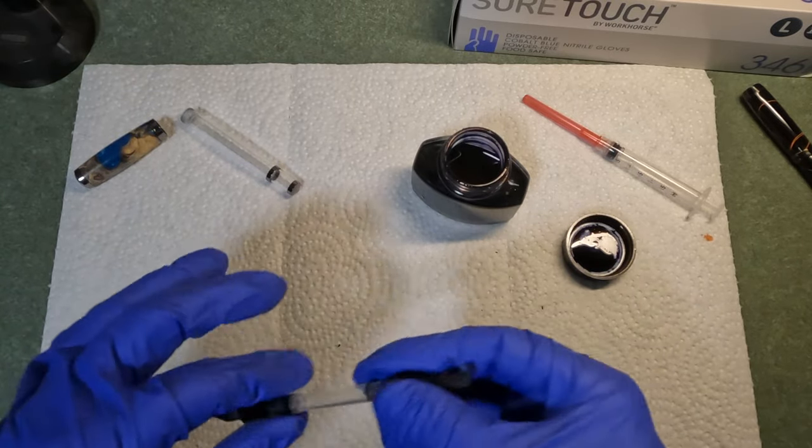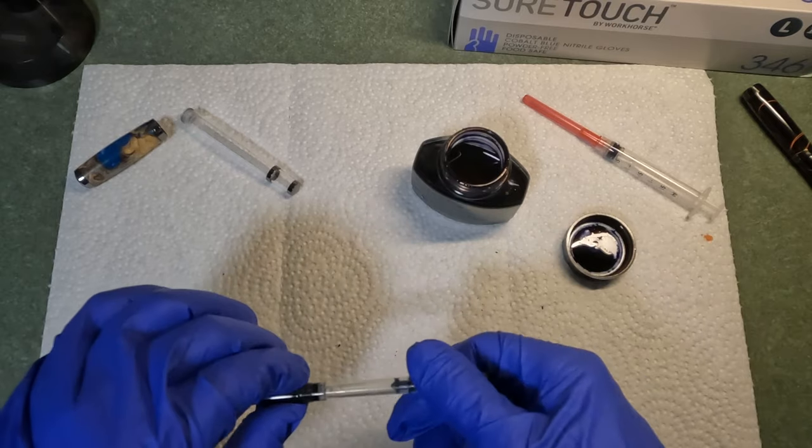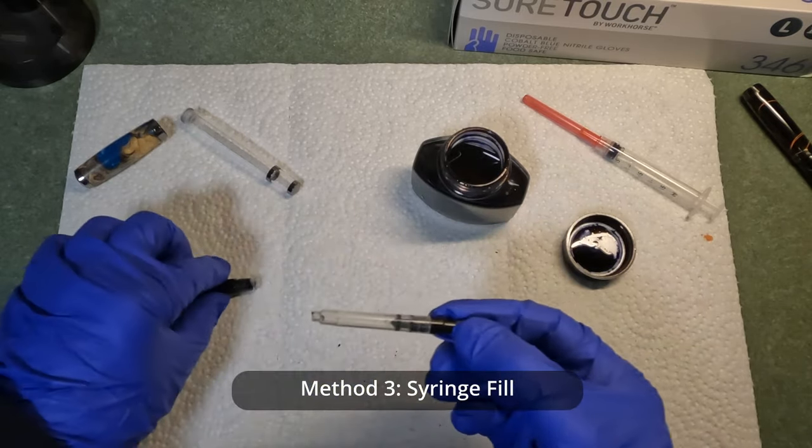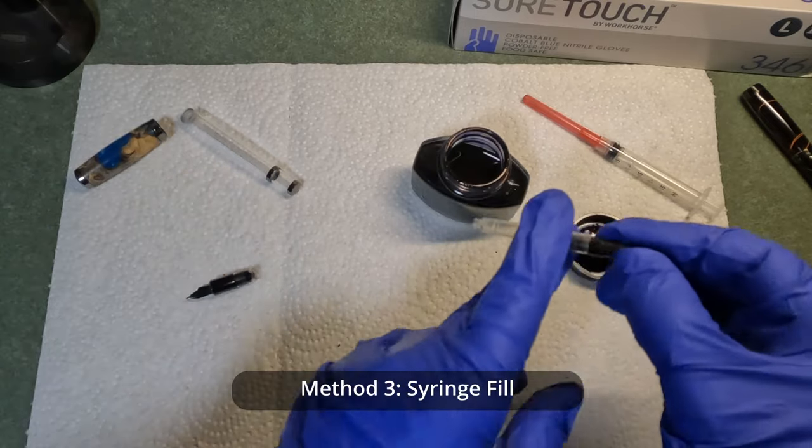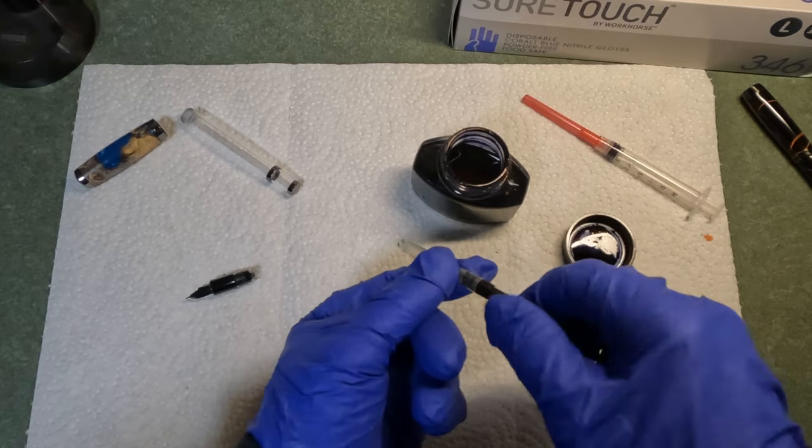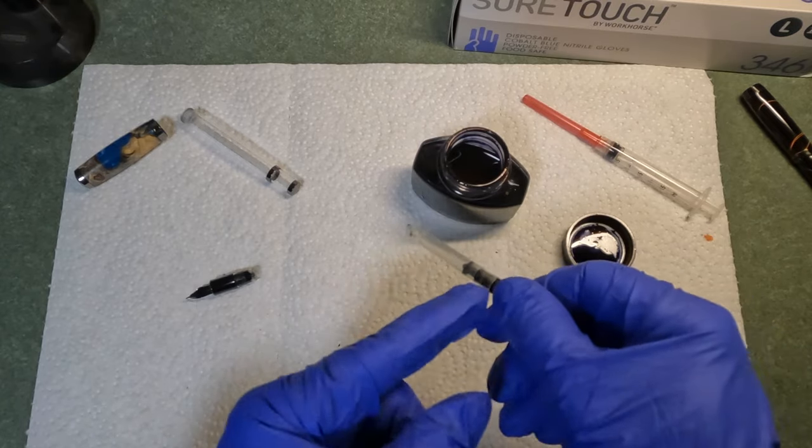The next option is to take the converter, remove the nib and the feed off, just dip the converter into the ink, and then in the same way, draw the ink back up.